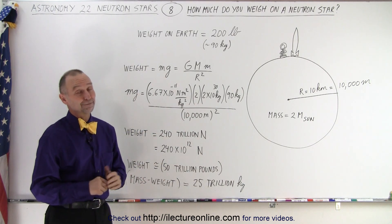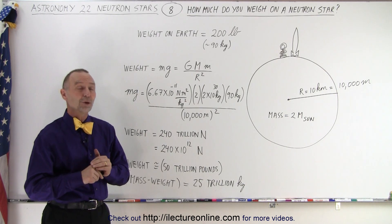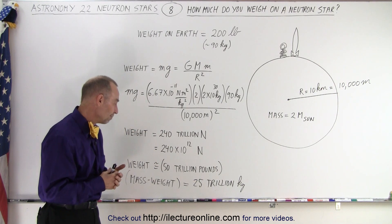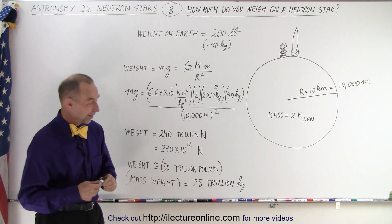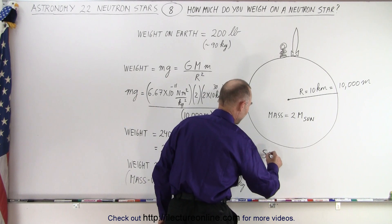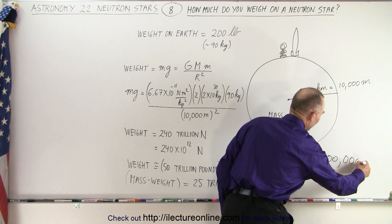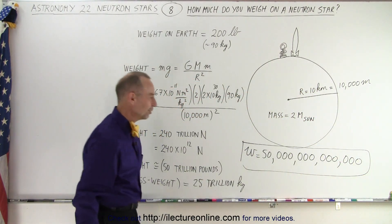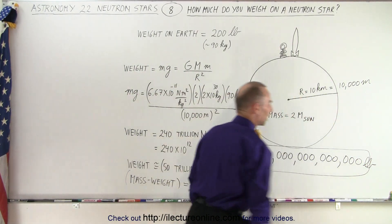That would be quite a place. So you can see the forces of gravity are absolutely enormous and your weight would be incredible — 50 trillion pounds. Let's write that out in zeros. Your weight, W, would be 50 with 12 more zeros. That would be your weight on top of a neutron star. Pounds — LB for pounds. It's a lot.